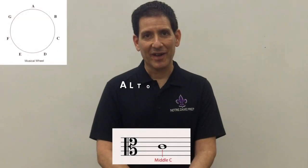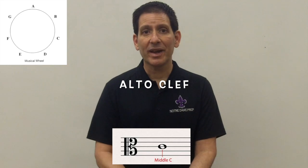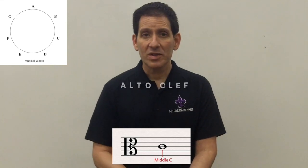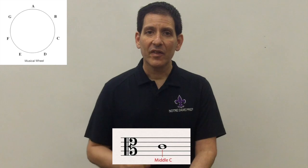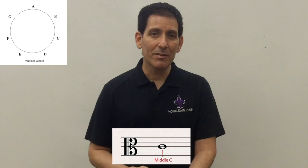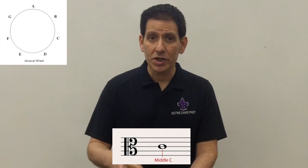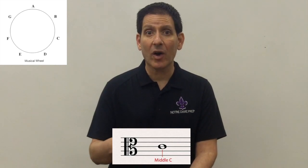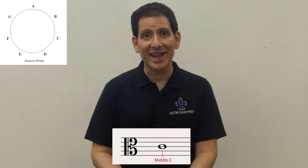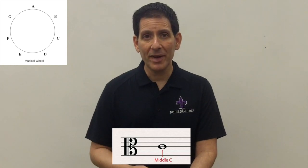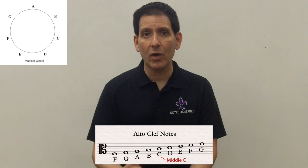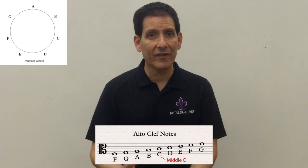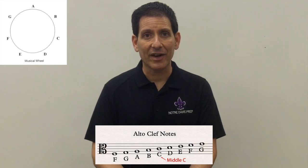The next clef we'll talk about is the alto clef. The alto clef is used by instruments like the viola. When we take a look at the alto clef, the thing to note is that the line in between those two arched sideway arches is middle C. We can count up and back from that middle C to figure out all the notes on the lines and spaces of the alto clef.